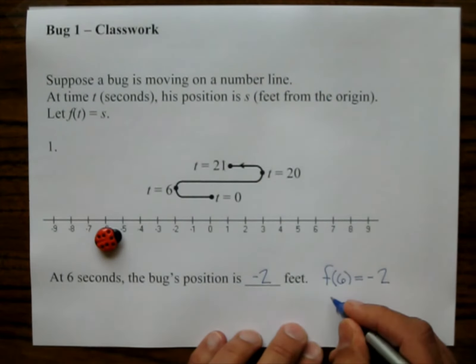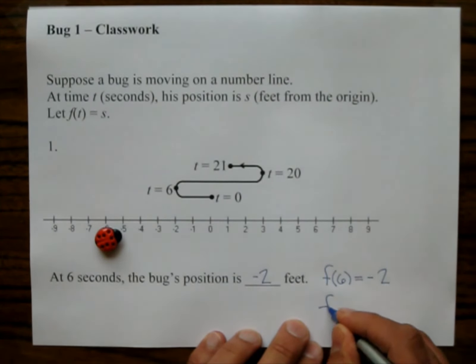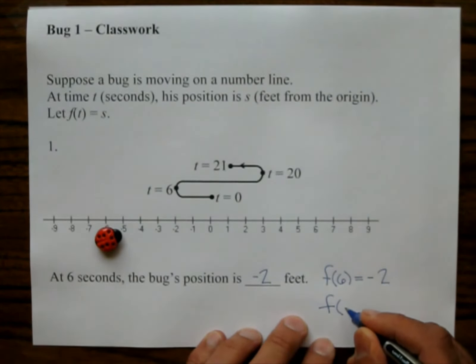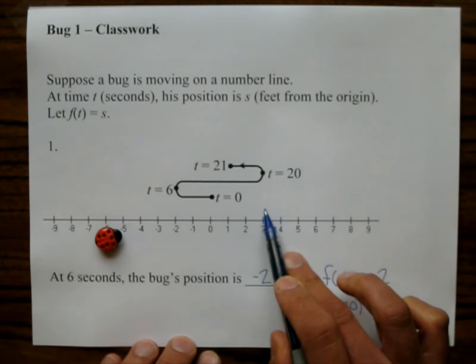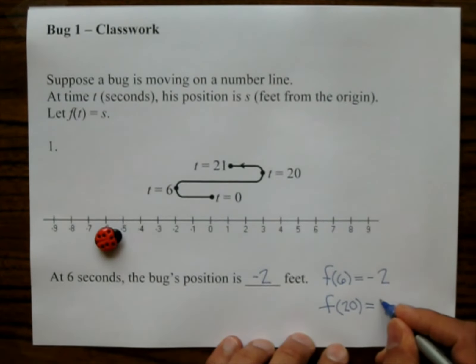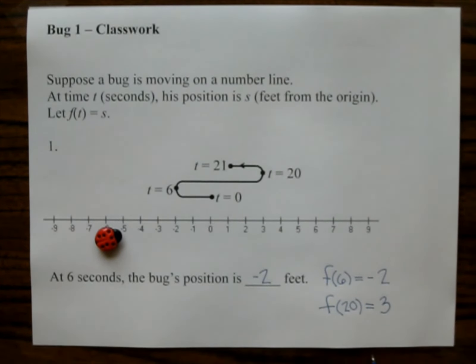So they could have asked, and they didn't. What is f of 20? So where is the bug after 20 seconds? Well here's 20 right here. And the bug would be where? At 3 on the number line. So it is a function because every input, the input is our time, has exactly one output, which is position.